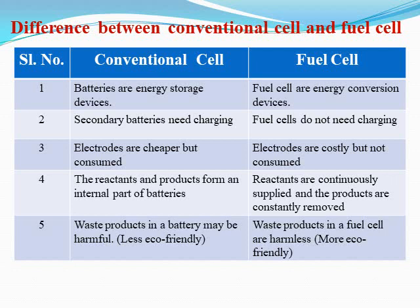In a conventional cell, electrodes are cheaper but the anode is continuously consumed. In fuel cells, electrodes are costly but not consumed. In batteries, the reactants and products form an internal part — both are located inside the battery as active materials. In fuel cells, reactants are continuously supplied and products of combustion are continuously removed, so they are not the integral part of the fuel cell.